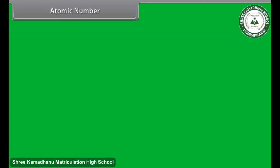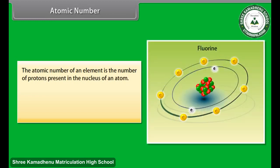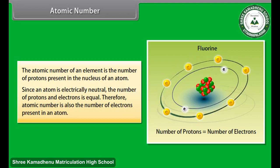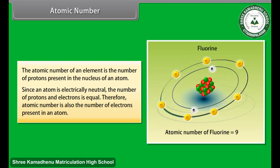Atomic number. The atomic number of an element is the number of protons present in the nucleus of an atom. Since an atom is electrically neutral, the number of protons and electrons is equal. Therefore, atomic number is also the number of electrons present in an atom.